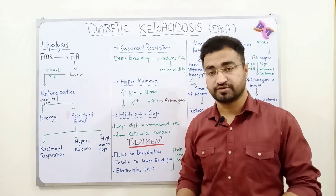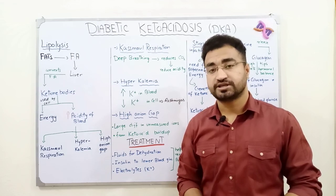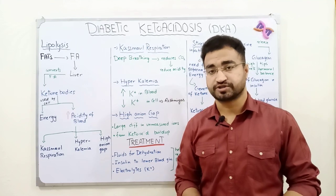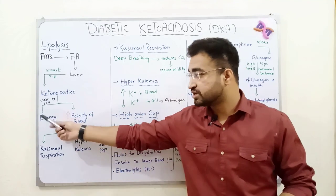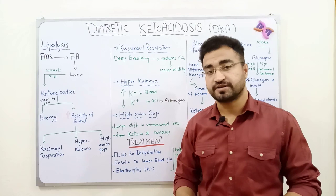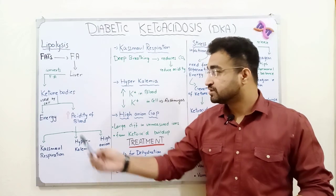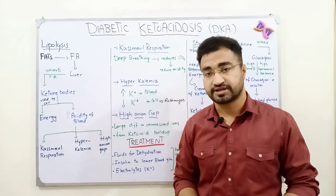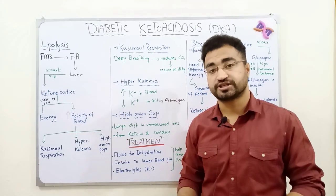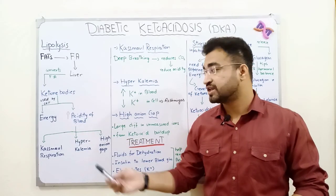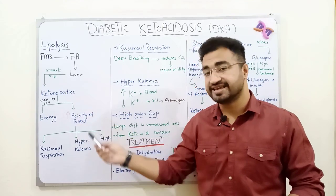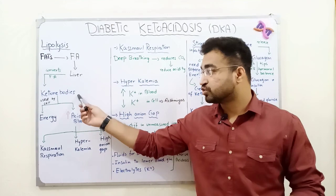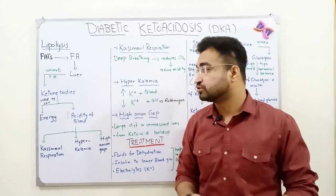So ketone bodies can be produced and used to generate energy — that energy problem is solved. However, while ketone bodies have the benefit of providing energy, they also have a drawback: they increase the acidity of your blood. This is because ketone bodies are acidic in nature.